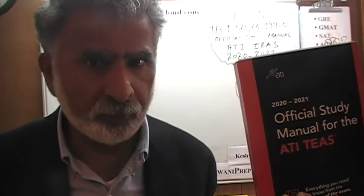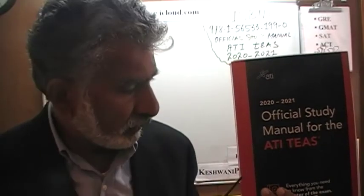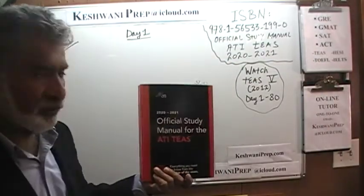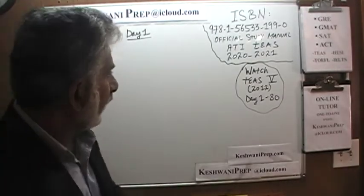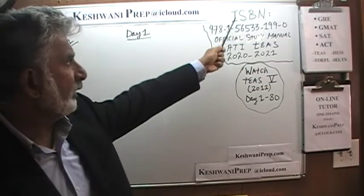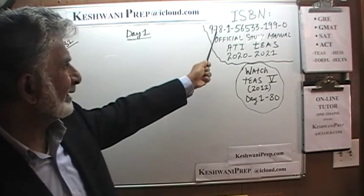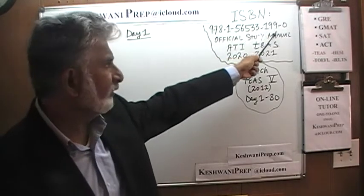Make sure that you have the book in front of you always. If you do not own this book, purchase one immediately — you are going to need it. Make sure you buy the 2020-2021 edition. On the blackboard I have put down the actual title: the official study manual for TEAS. Here is the ISBN number: 978-1565-331990.